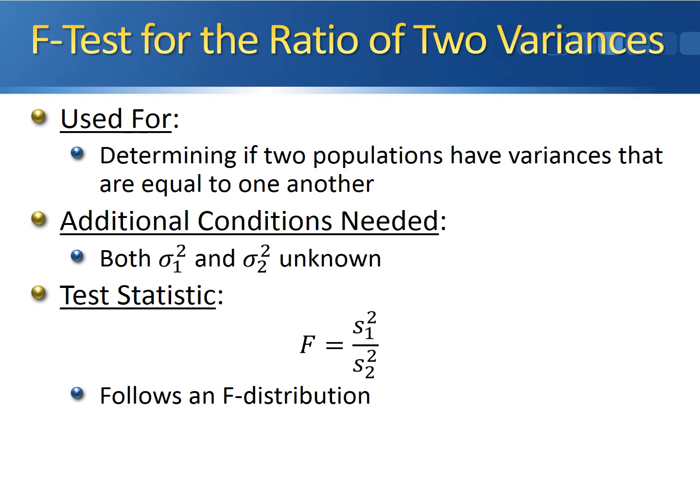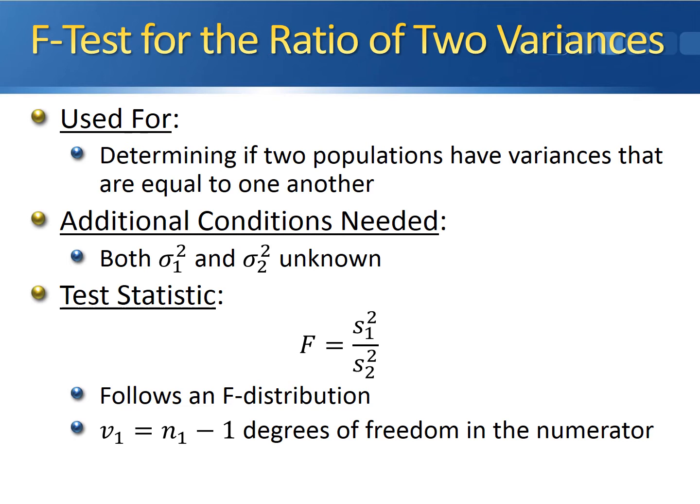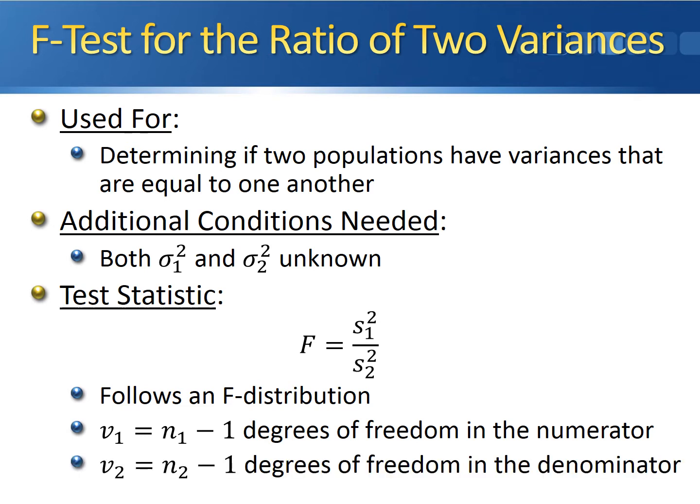This test statistic has two parameters for the degrees of freedom. The numerator degrees of freedom, denoted V1, is the sample size from the first sample minus one. The degrees of freedom in the denominator, denoted V2, is the sample size from the second sample minus one.